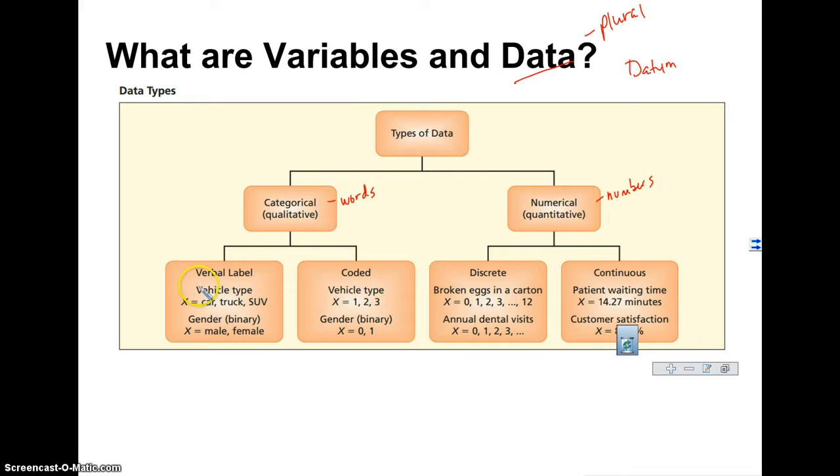The example that I gave just a second ago where our class was asked whether they like Toy Story or Frozen, the answer that they would give me would be Toy Story or Frozen. And that answer is in words. So that is considered a categorical variable. Usually it has something to do with a verbal label. So like here, a vehicle type could be a car, truck, or SUV. Male, female. Yes, no questions are categorical.